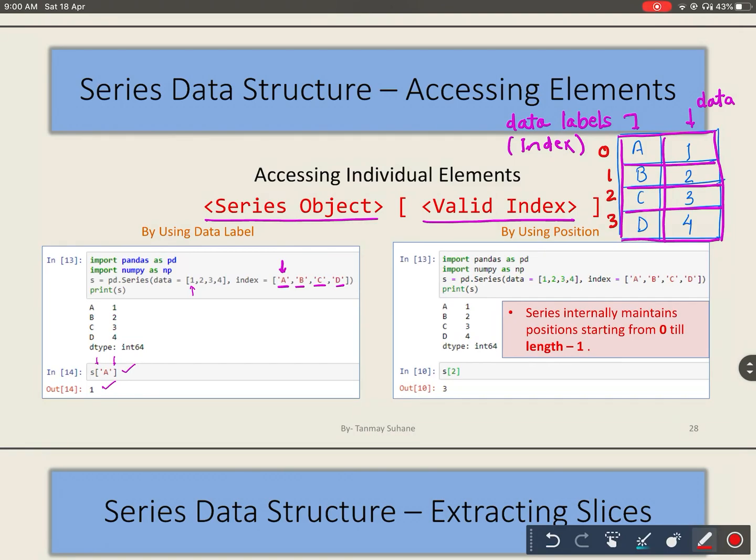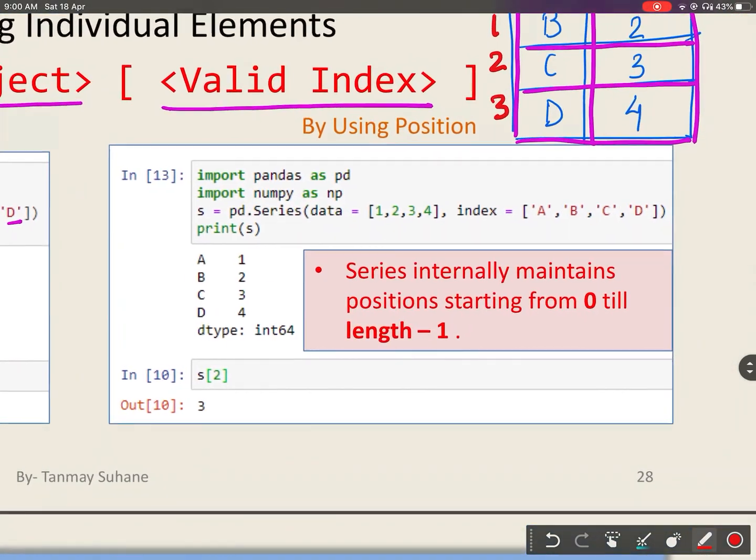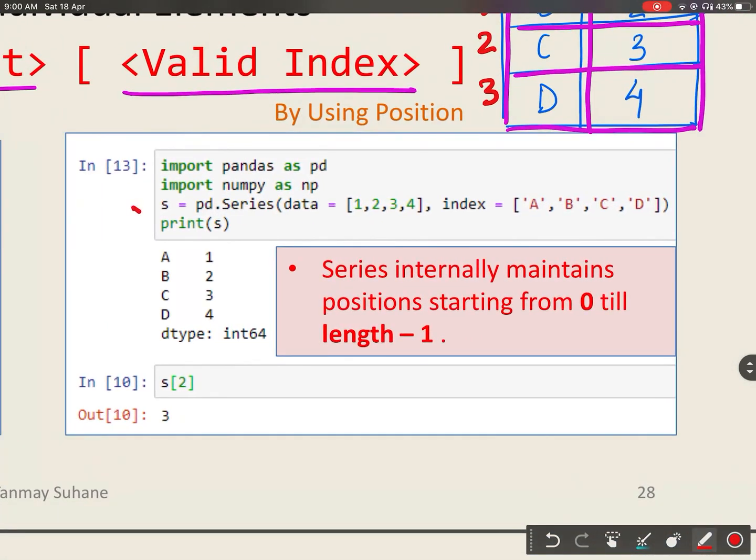You can access the elements using position also. See this example where I am taking the same Series and taking the data out from position 2. If it is 0, then 1, then 2, that is why it is printing 3. This is useful...